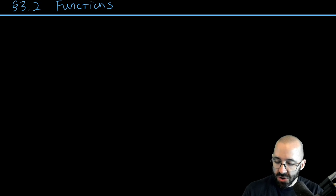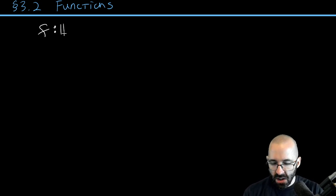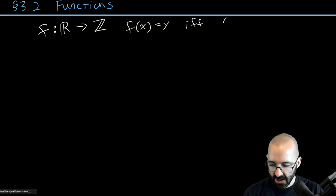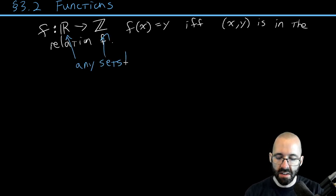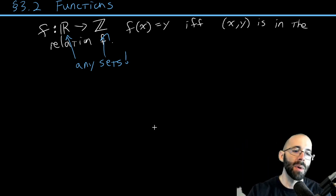Eventually we're going to say something along the lines of this: we are going to have a function that maybe goes from the real numbers to maybe the integers, and we write f(x) = y, and that means (x,y) is in the relation f. These can really be any sets, which is kind of fun. A lot of times in a math class they're going to be the same set, often the real numbers for both of them.